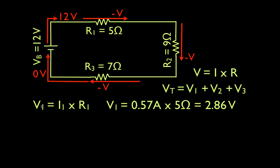So we calculate the voltage drop. We started with 12. That means it drops by 2.86 volts when the current goes through resistor number one. We do that for number two. Same thing. Same current, different resistance. It drops by 5.14 volts.